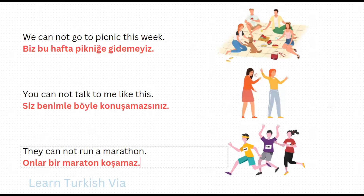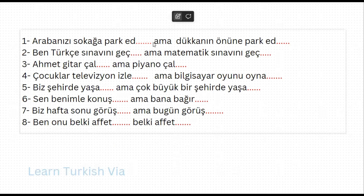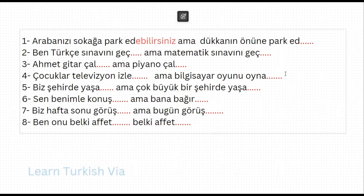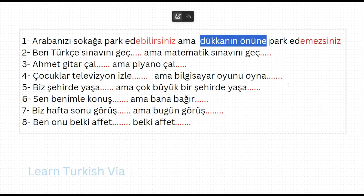Alright, now let's continue with another exercise for perfection. In the first part of the sentence we are going to use can, and in the second part we are going to use cannot. Here it says 'arabanızı sokağa park et' – you can – edebilirsiniz, 'ama dükkanın önüne park edemezsiniz.' You can park your car on the street, but you cannot park the car in front of the shop. 'Arabanızı sokağa park edebilirsiniz, ama dükkanın önüne park edemezsiniz.'